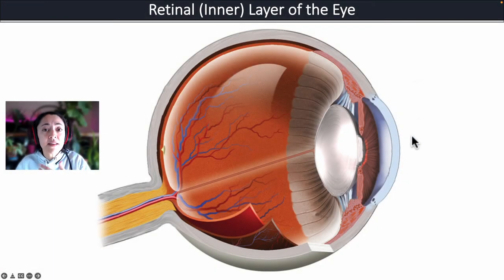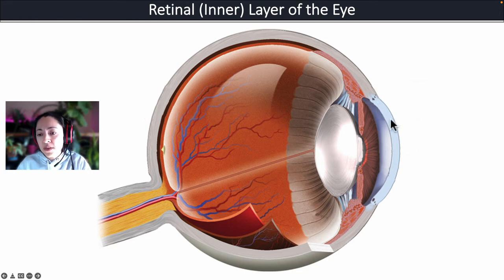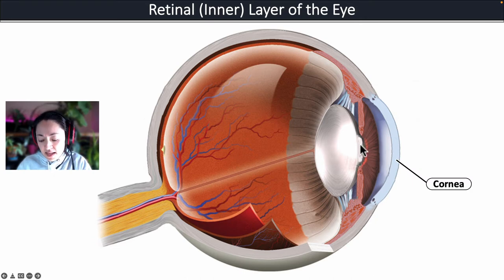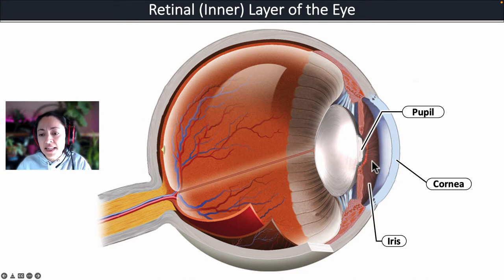Let me give you a quick overview of the structures that make up the anatomy of the eye. In the front of the eye we have this clear curved structure known as the cornea. As light passes through the cornea it is bent and the light is focused through the pupil, which is the opening in the iris. The area surrounding the pupil is known as the iris and it contains smooth muscles to alter the diameter of the pupil.